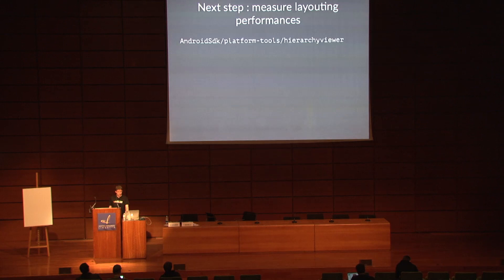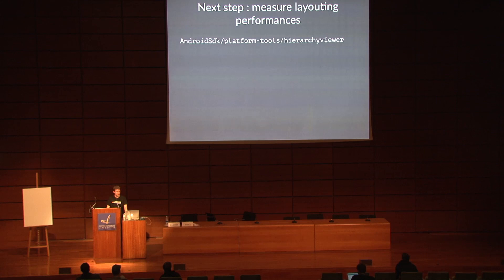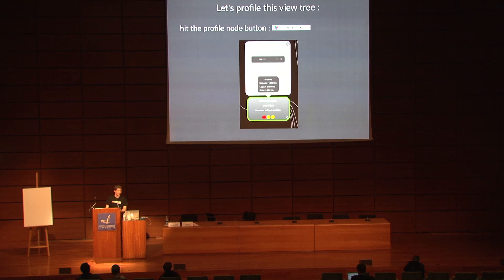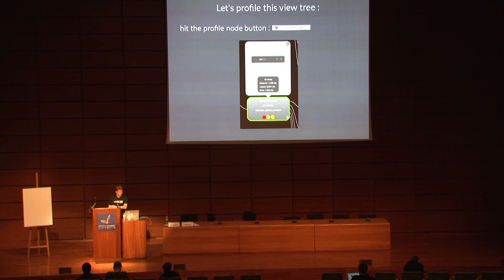The next step is to measure layouting performance in order to know exactly where the problem is coming from. The platform provides a hierarchy viewer, which allows you to display the whole view hierarchy. Android, like most UI frameworks, displays layouts as boxes in boxes in other boxes — you build a tree of views. The hierarchy viewer allows you to get some information on how each node is performing relatively, though it's not too accurate.